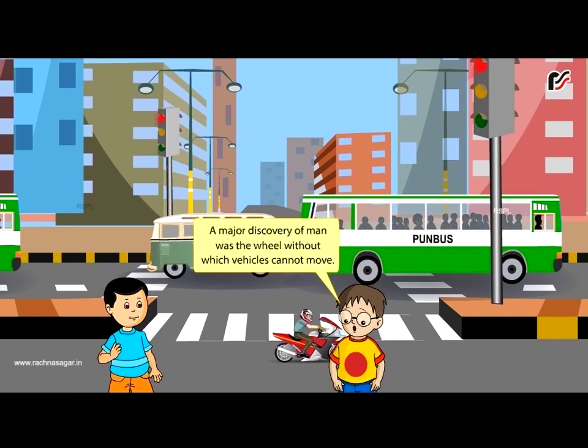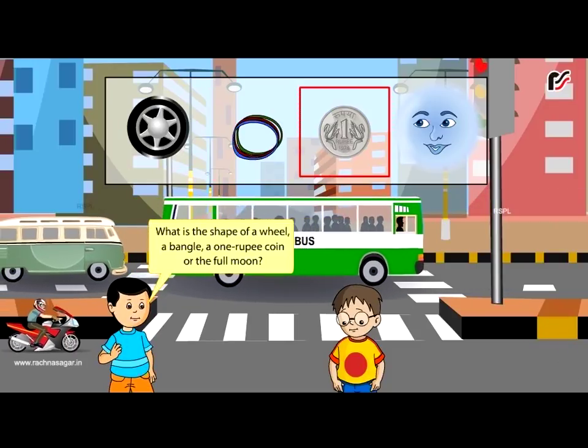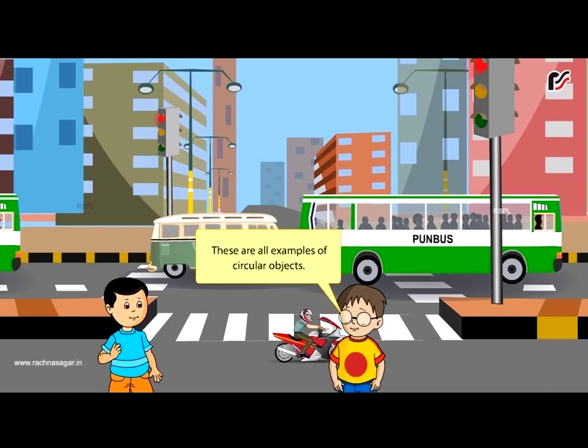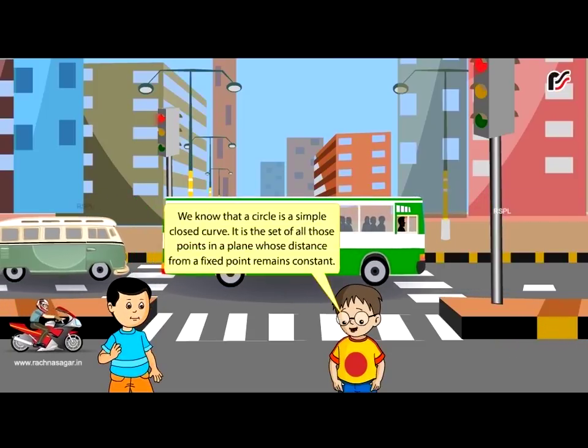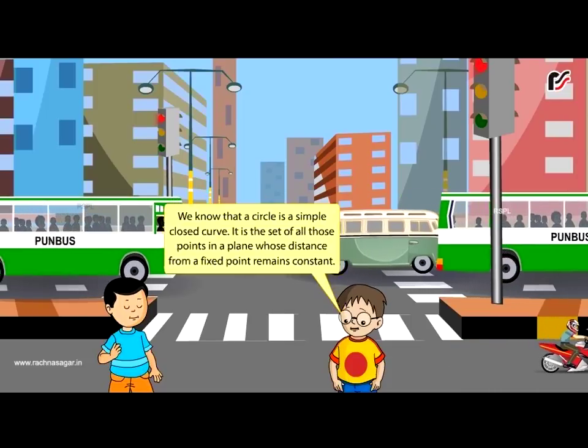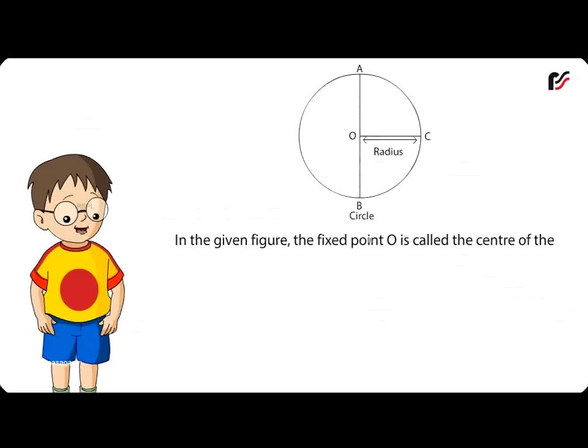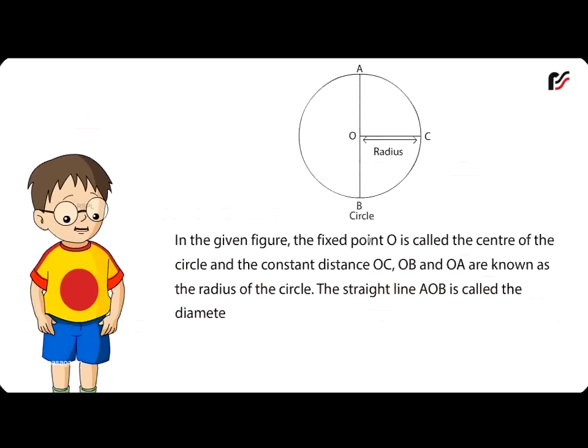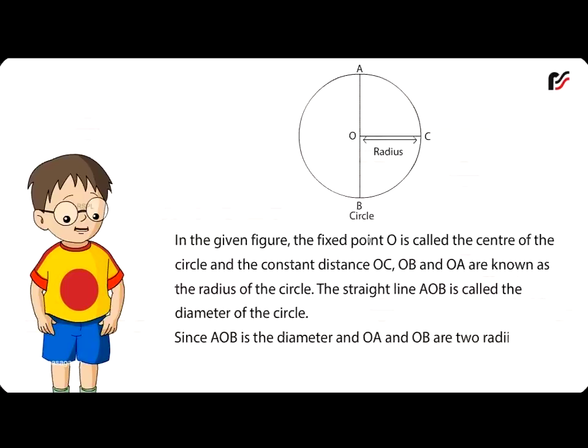Circle: A major discovery of man was the wheel without which vehicles cannot move. What is the shape of a wheel? A bangle? A 1 rupee coin? Or the full moon? These are all examples of circular objects. Let us study the terms related to the circle in detail. We know that a circle is a simple closed curve. It is the set of all those points in a plane whose distance from a fixed point remains constant. In the given figure, the fixed point O is called the center of the circle and the constant distance OC, OB and OA are known as the radius of the circle. The straight line AOB is called the diameter of the circle. Since AOB is the diameter and OA and OB are two radii.